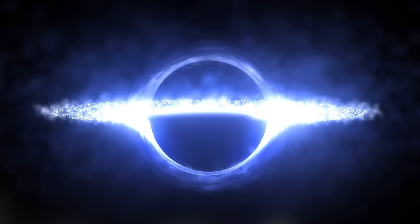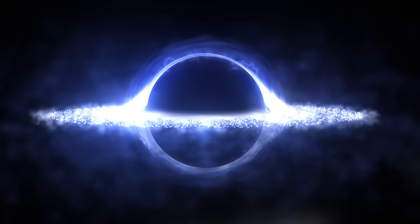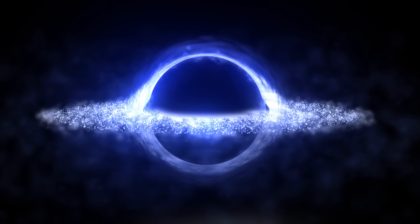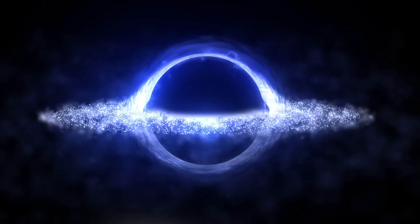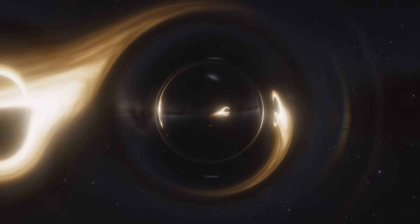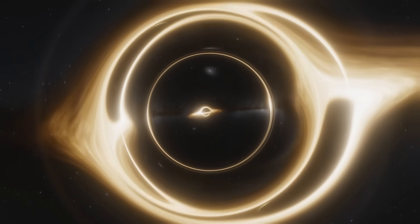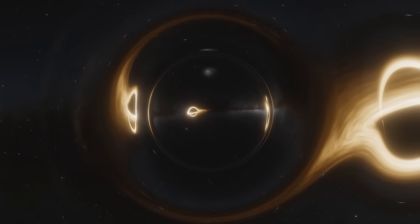However, space-time gets way more complicated when you have a mass which rotates, and so far, we only know about the existence of black holes that have angular momentum, or a spin. They form from the collapse of rotating massive stars, and as matter collapses, the rotation is conserved, leading to the formation of a spinning black hole.